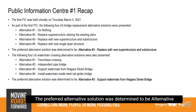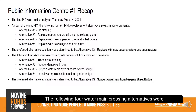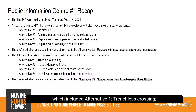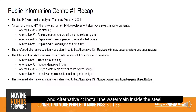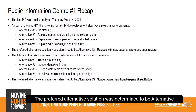The preferred alternative solution was determined to be Alternative 3: replace with a new superstructure and substructure. The following four water main crossing alternatives were also presented during the first PIC: Alternative 1 – trenchless crossing; Alternative 2 – independent pipe bridge; Alternative 3 – support the water main from the Niagara Street bridge structure; and Alternative 4 – install the water main inside the steel tub girder bridge. The preferred alternative solution was determined to be Alternative 3: support water main from Niagara Street bridge.